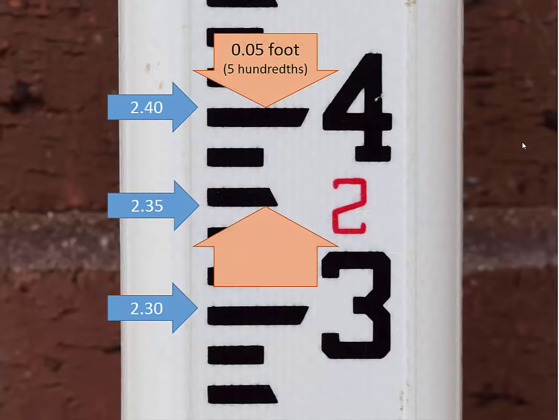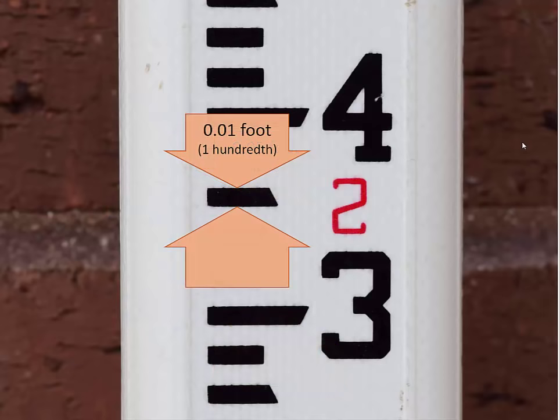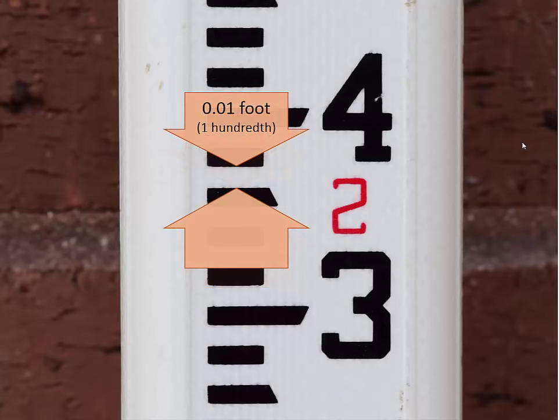Here you can see the upper five hundredths within any whole tenth of a foot contains three black marks and two white spaces. Then the lower five hundredths within the same tenth contain two black marks and three white spaces. Remember that each black mark and each white space are the same height. That is one one-hundredth of a foot.